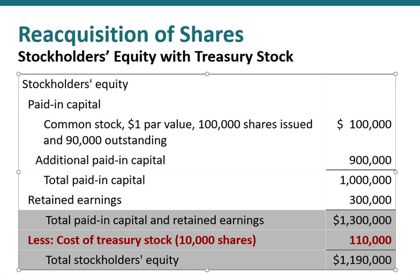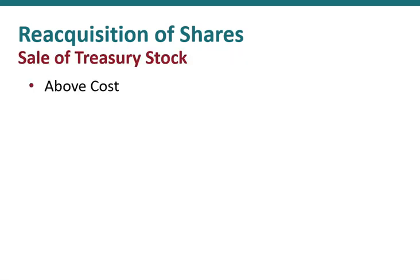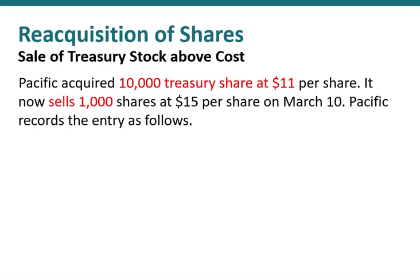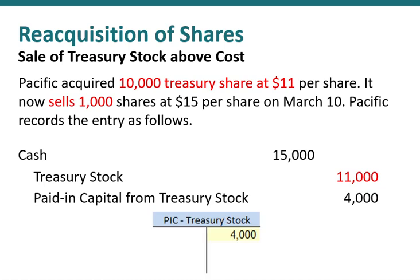After reacquiring treasury shares we might decide to reissue those shares. We can account for them if reissued above cost or below cost. Both transactions increase assets as we receive cash, as well as increase stockholders equity. For example, we reissue 1,000 of the 10,000 shares acquired at $11 per share, now sold at $15 per share. We debit cash for $15,000, credit treasury stock for $11,000, and credit additional paid-in capital from treasury stock for $4,000. We'll keep an eye on that $4,000 balance.